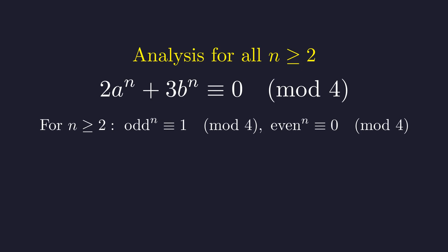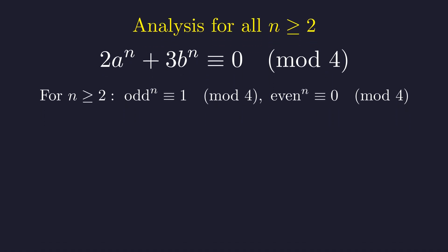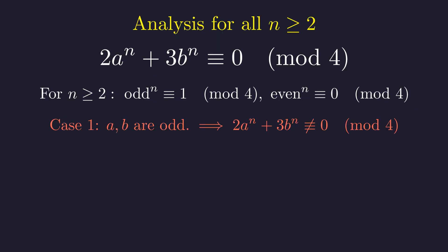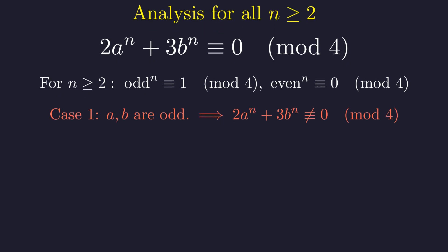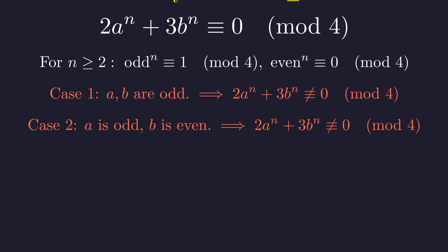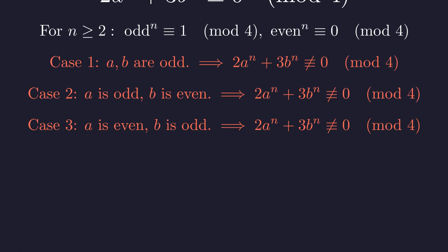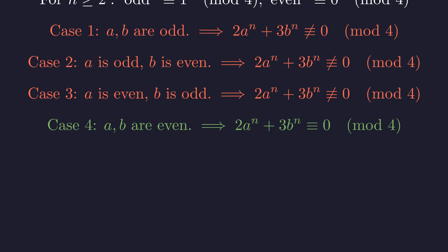When n is at least two, odd numbers to the n are congruent to one modulo four, while even numbers to the n are congruent to zero modulo four. Let's examine the four parity combinations for a and b. First, if both a and b are odd, the expression is never a multiple of four, leading to a contradiction. Second, if a is odd and b is even, we again find a contradiction. Third, if a is even and b is odd, this also fails.